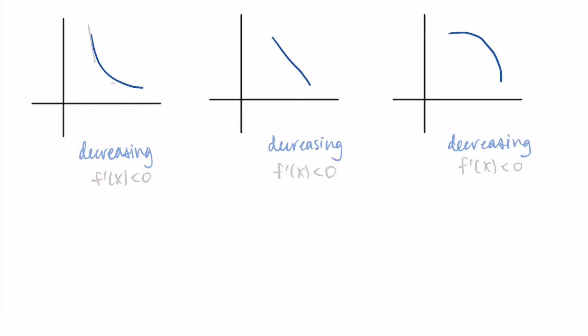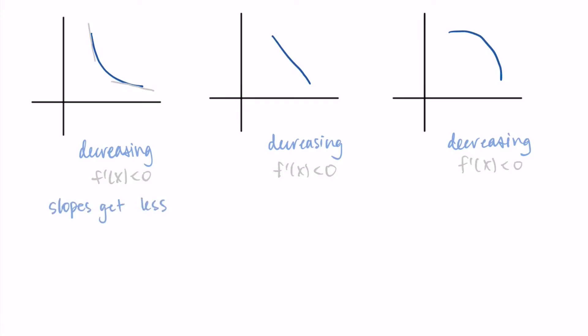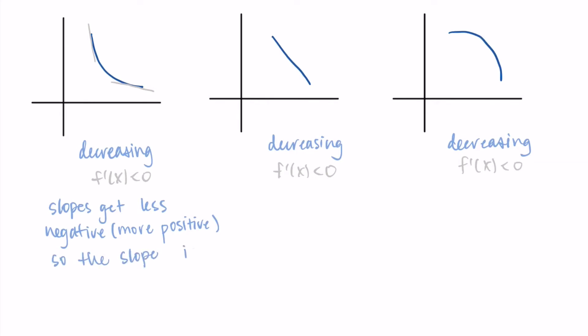On the first decreasing graph, drawing my two tangent lines, the slopes are negative but becoming flatter — becoming less negative. So whereas the first tangent line has a slope of maybe negative 10, the second has a slope of maybe negative one. The slopes are getting less negative, meaning more positive, so the slope is increasing over time. We can use the word derivative instead of slope, so the derivative is increasing over time. This means the second derivative is positive here.